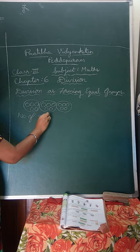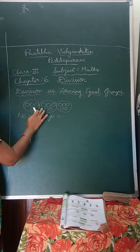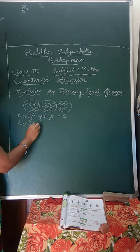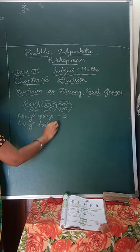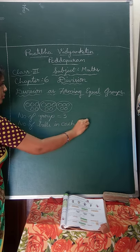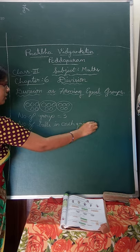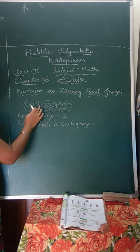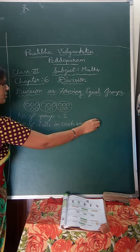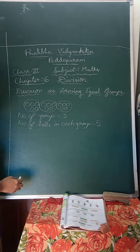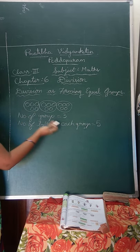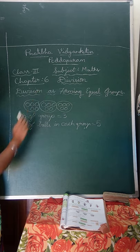Number of groups — how many groups are there? Count: 1, 2, 3 — there are 3 groups. And number of balls in each group: 1,2,3,4,5 and also 1,2,3,4,5 and here also 1,2,3,4,5. So each group contains 5 balls. Number of groups: 1, 2, 3 and number of balls in each group: 5, 5, and 5.